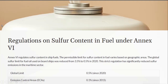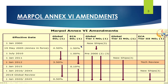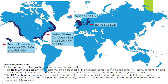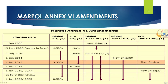Before 2020, the global sulfur cap was 3.5%, which was reduced to 0.5% on 1st January 2020. This was a very large reduction, and therefore a separate chapter came about called IMO Sulfur Cap 2020. In terms of history: on 19 May 2005, the global sulfur cap was reduced from 4.5% to 3.5% effective 1st January 2012. After that it was reduced further to 0.5% on 1st January 2020.